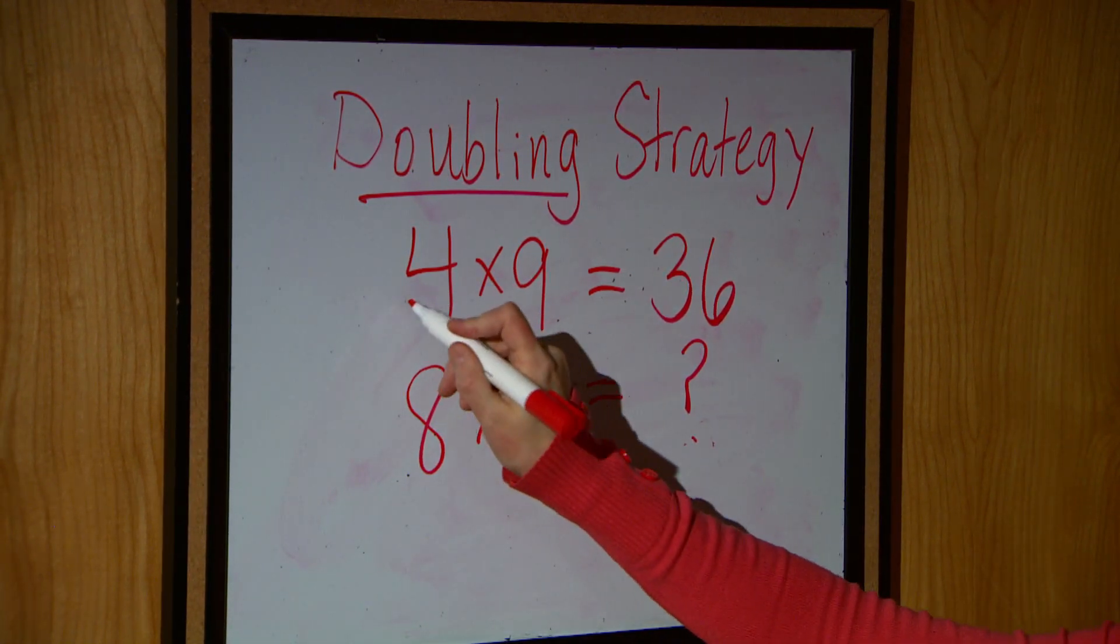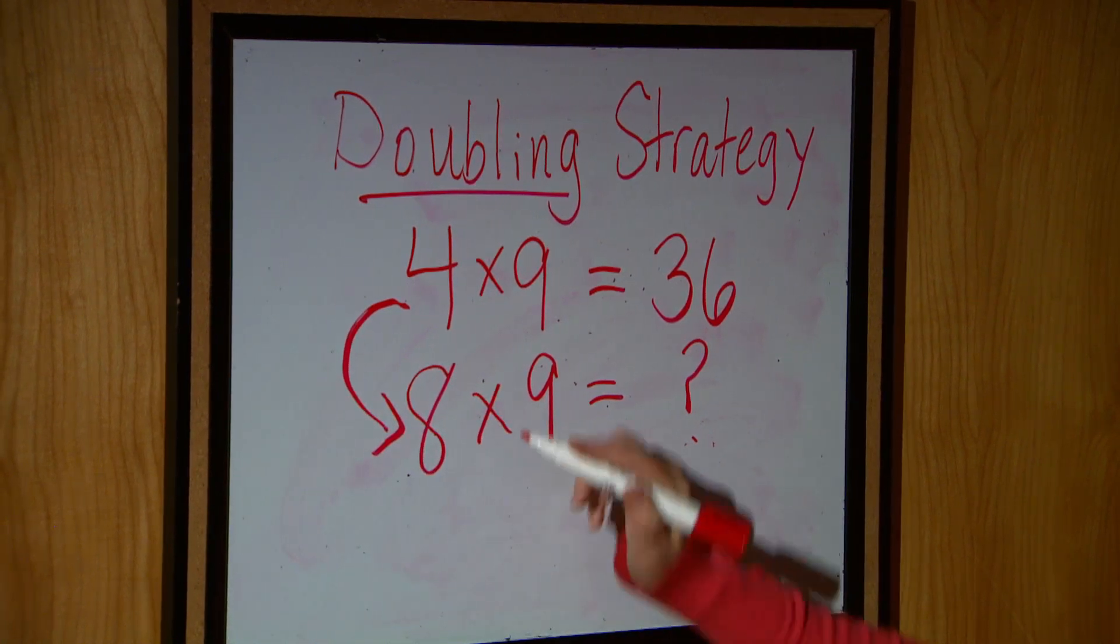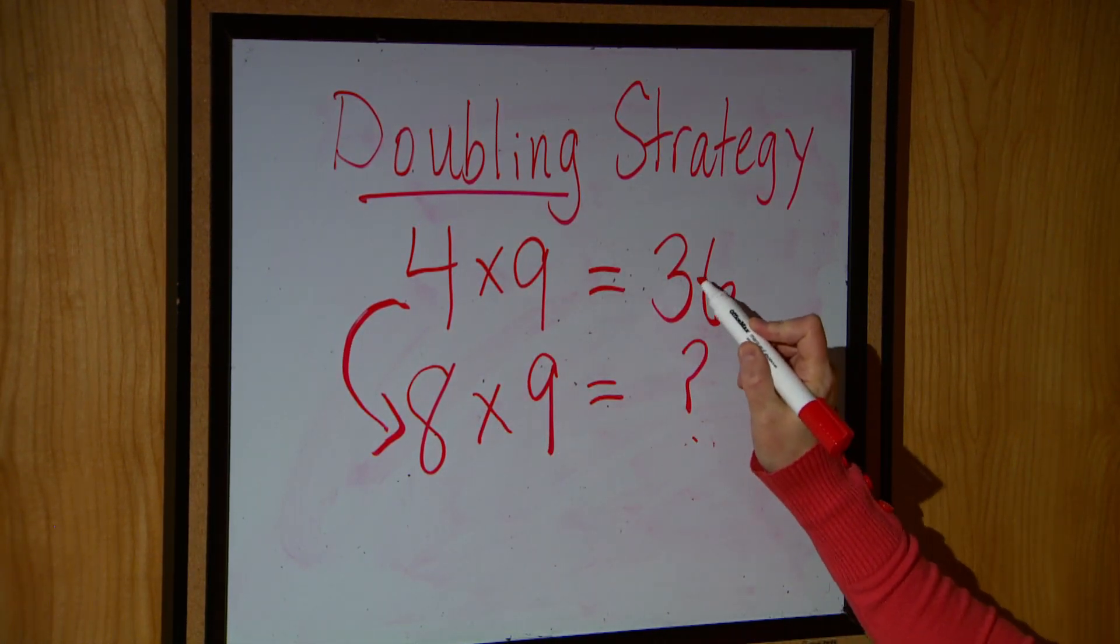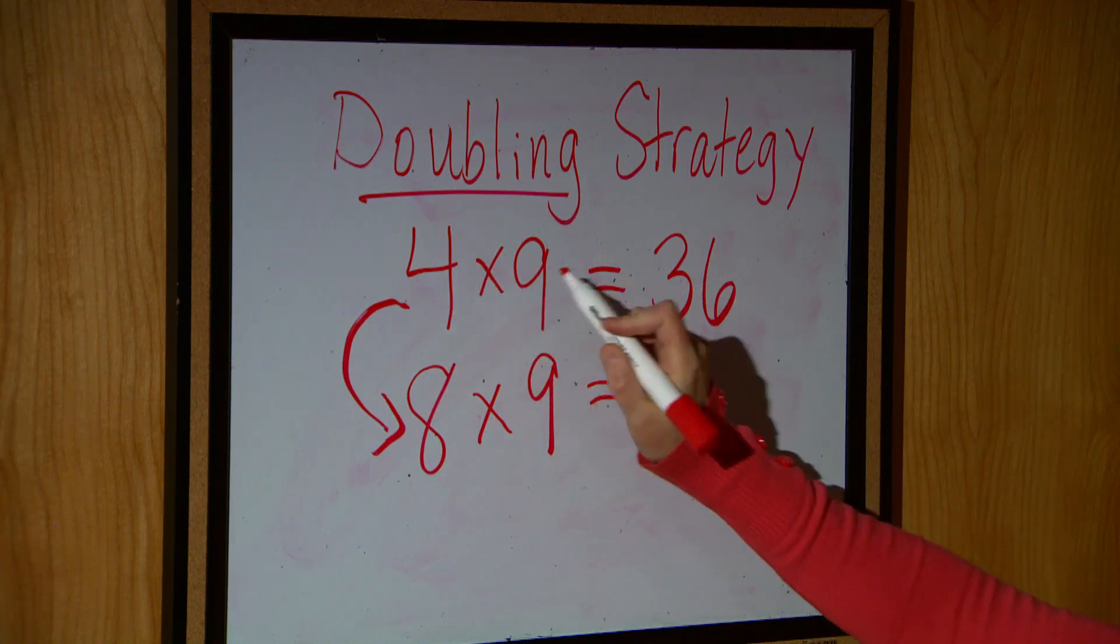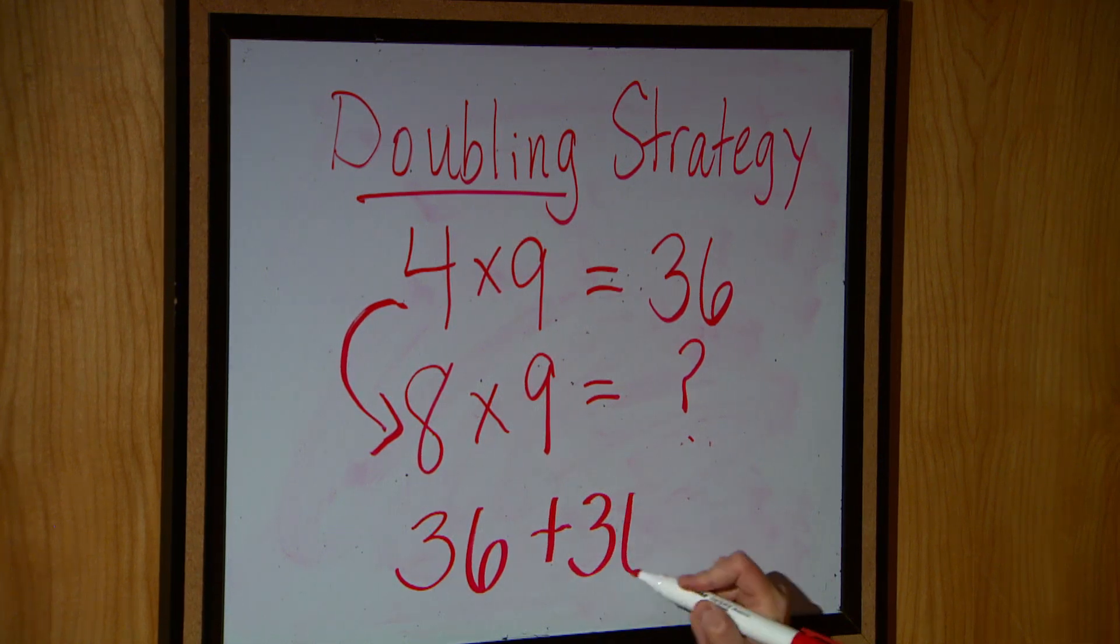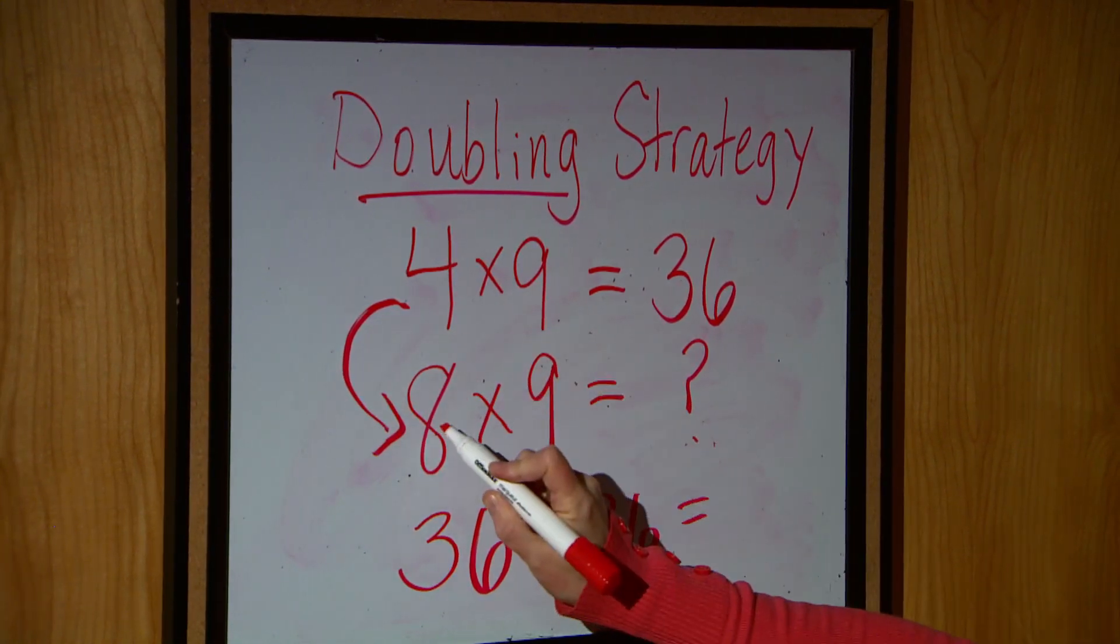And of course, you can see that this is four and this is eight. So we've had a doubling happen here. So we know that we're going to take our product here, which was 36 from four groups of nine, and we're going to double that product because now we have doubled our amount of groups.